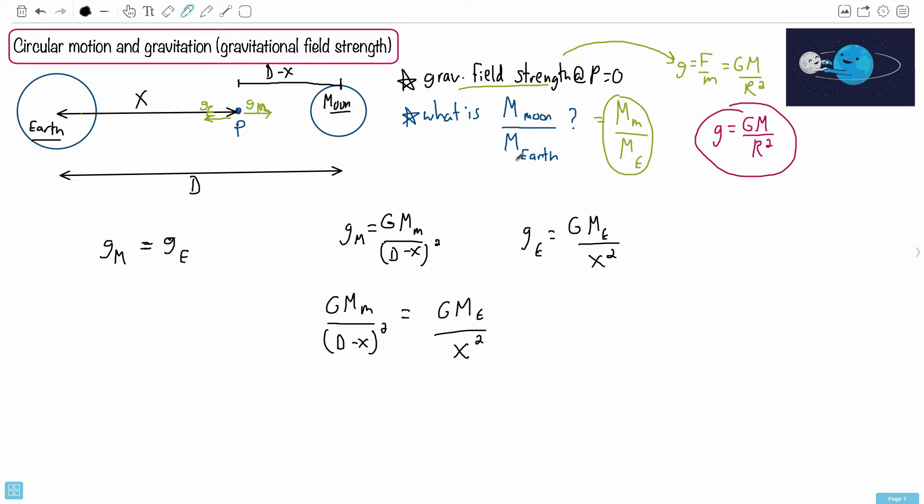Notice we haven't really looked at how to solve it. We're just doing some math. We've got the G's cancel out. And now let's start looking at what we're supposed to be doing. So now it's maybe a good time to pop your head up and look around and be like, oh yeah, I want the mass of the Moon over the mass of the Earth. I want M M over M E.